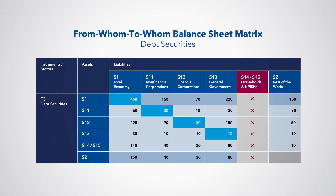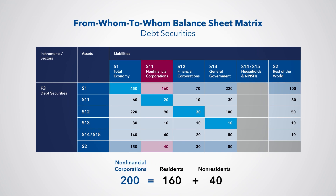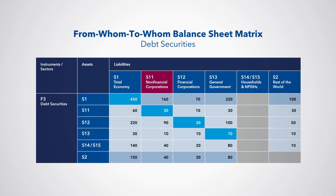The institutional sector accounts of an economy do not capture transactions or positions of other economies with each other. Therefore, the cell that shows the stock of debt securities issued by non-residents and held by non-residents is also grayed out. Looking closer at the non-financial corporation sector, the from-whom-to-whom table shows the total issuance of debt securities by non-financial corporations was 200 units. Of the 200 units, 160 units were held by resident sectors and 40 held by non-residents. Of resident sectors, financial corporations held a majority of 90 units, households and NPISH held 40 units, and other non-financial corporations held 20 units in corporate debt.